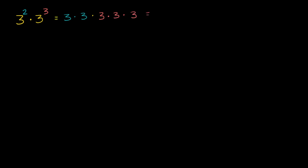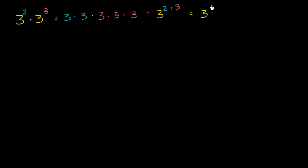So what is this going to be equal to? This is going to be equal to three to the two plus three power. This comes straight out of what an exponent is. We're taking two threes and multiplying them together, and then multiplying that with three threes being multiplied together. So you end up with two plus three, or five threes being multiplied together. This is going to be equal to three to the fifth power.